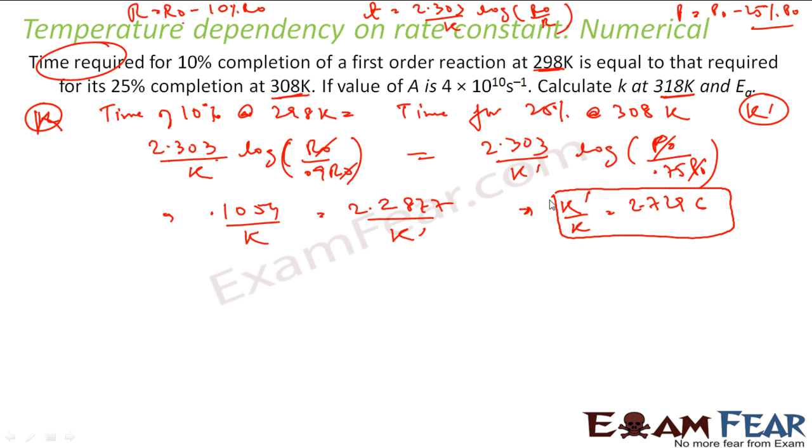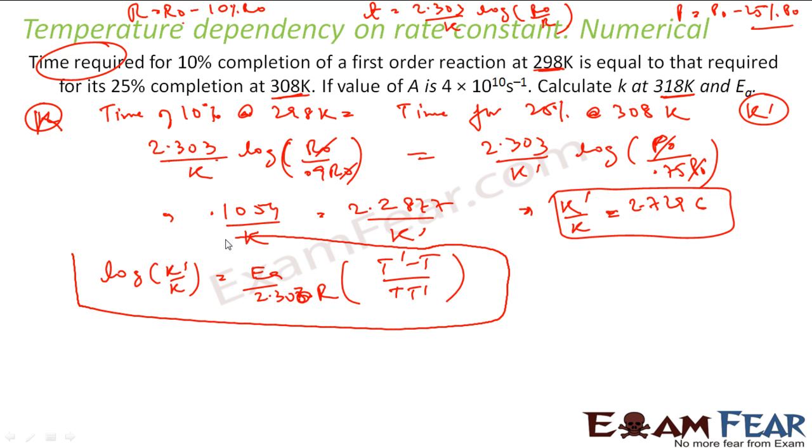I know the rate constant relation between them. But I also know one relation: log of K dash by K equals EA by 2.303R times T dash minus T by T T dash. I just derived it in the last example using K equals A e to the power minus EA by RT. We have to find EA. R is something I know. T dash and T also I know.